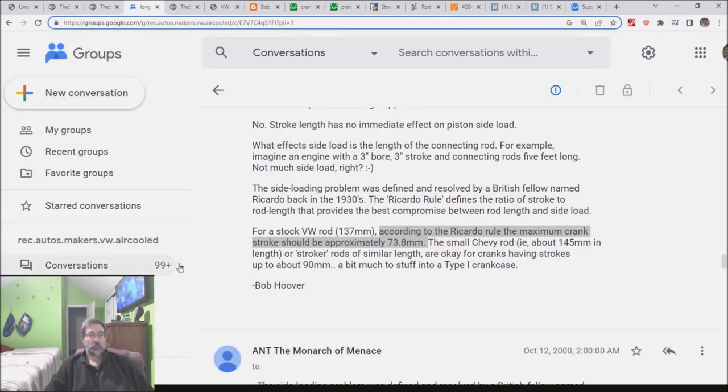So where did this come from? Well, that comes from things like this. According to the Ricardo rule, the maximum crank stroke should be approximately 73.8. We've got a guy who's quoting Hoover and Hoover appears to be quoting Ricardo.